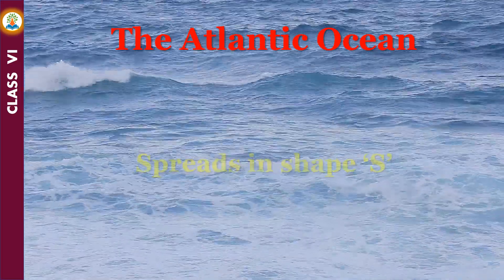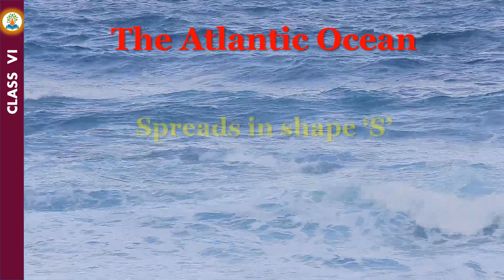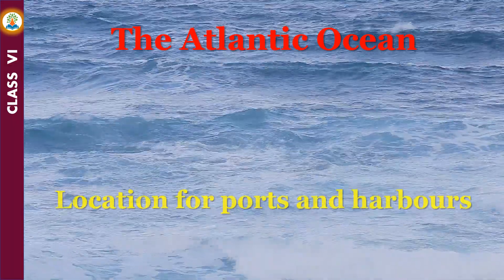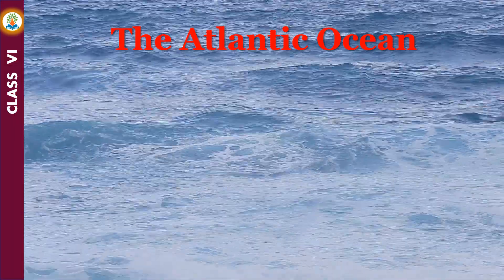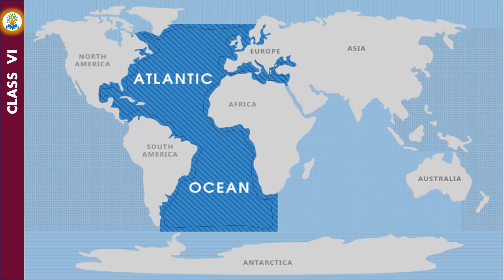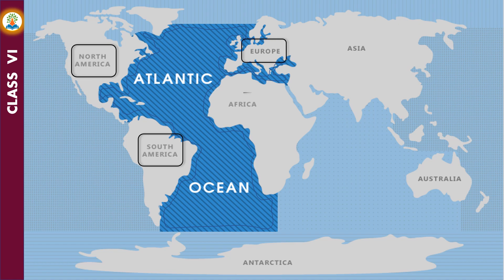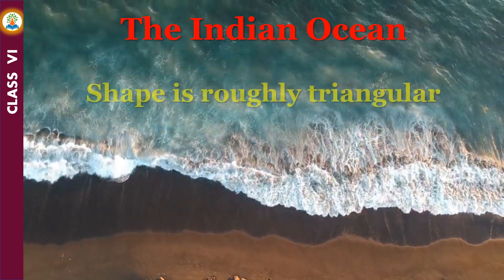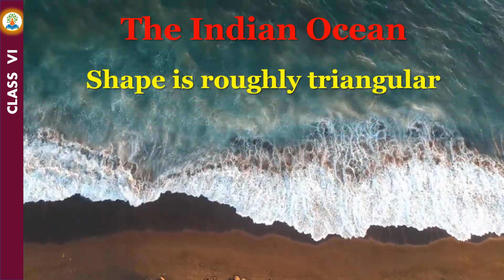The Atlantic Ocean is the second largest ocean. It is S-shaped and provides excellent locations for ports and harbors. The continents of North America and South America border this ocean in the west, while Europe and Africa make up its eastern boundary.